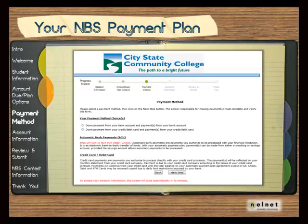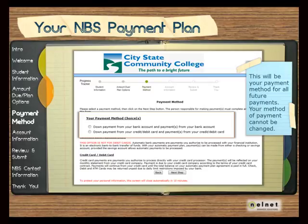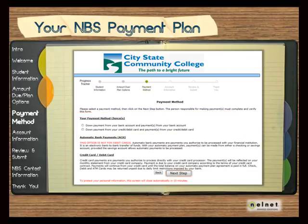Now it's time to select your payment method. Choose the payment method that is best for you. If you select Payments from your bank account, all payments will be processed from a bank account. Similarly, if you select Payments from your credit or debit card, all payments will be processed from that account. You are not able to switch between having payments processed from a bank account to a credit card or vice versa. Once you have selected your option, click on the Next Step button.